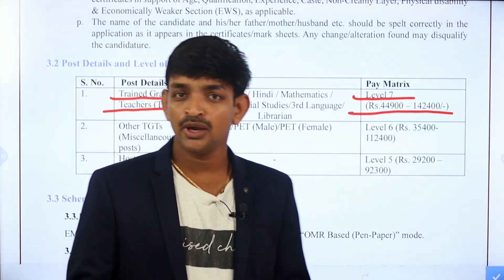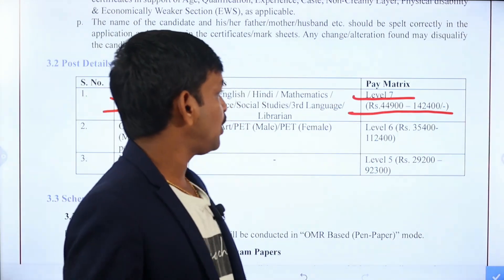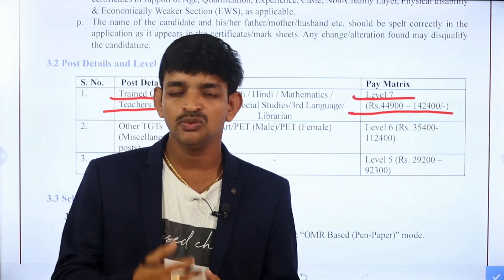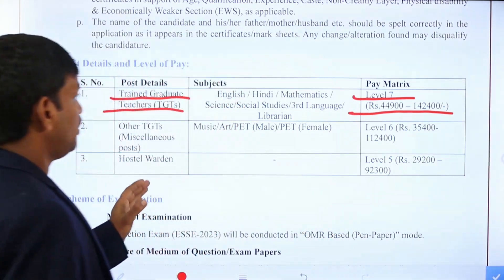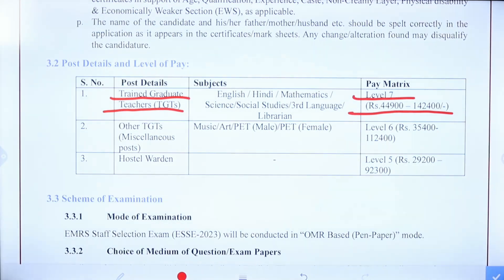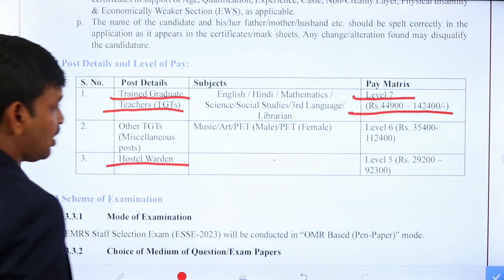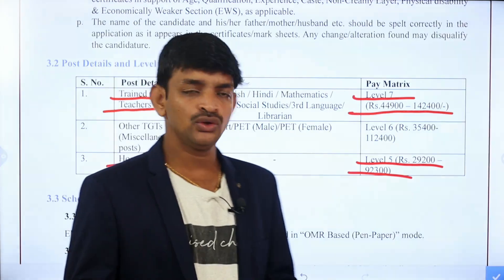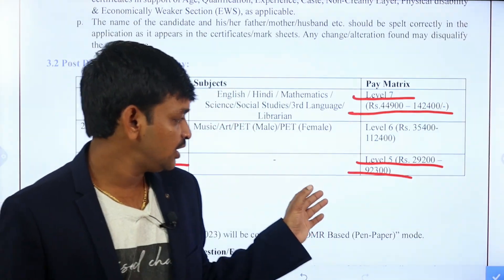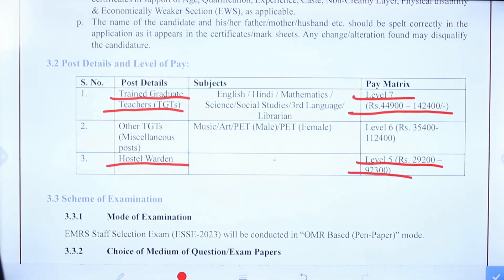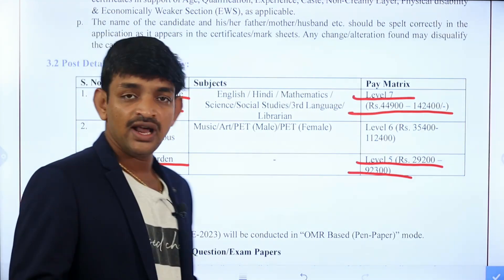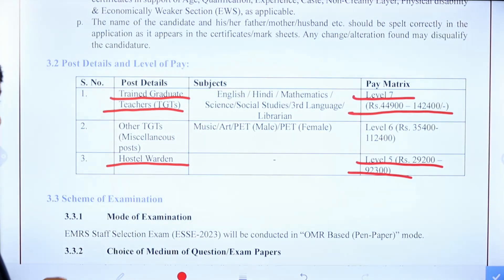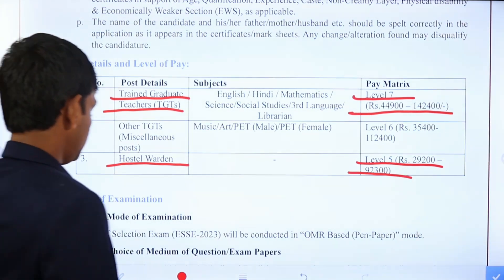For the Hostel Warden post, you can choose a Level 5 salary. Level 5 salary includes basic pay and maximum pay. With the maximum pay and basic pay, you can also receive allowances including house rent, daily expenses, and transport expenses. The salary range is approximately 50,000 to 60,000.